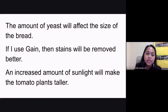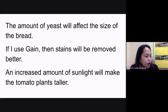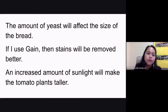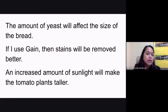Let's look at three hypotheses. Hypothesis number one: the amount of yeast will affect the size of the bread. Your independent variable is the amount of yeast, because that is the variable you are going to change in your experiment — you will use different amounts of yeast. The dependent variable is the size of the bread, because that is the effect of using different amounts of yeast.